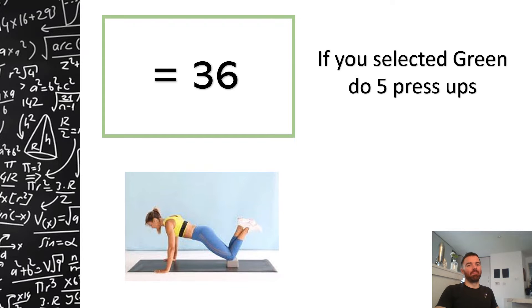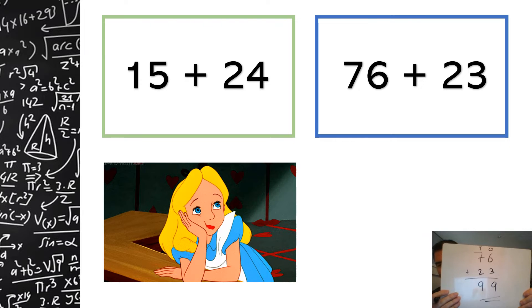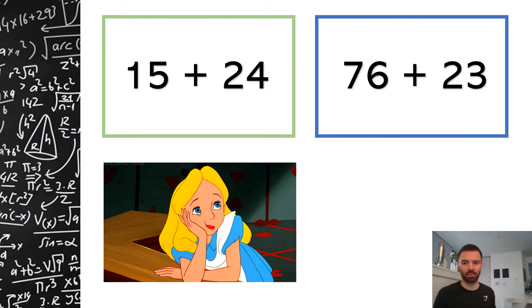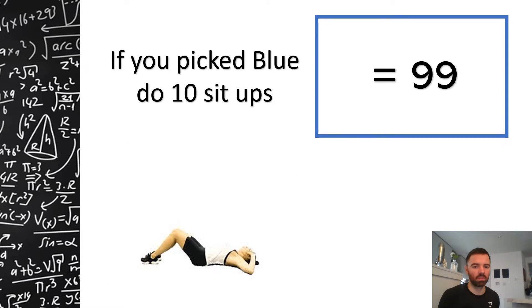Okay, okay, we're ready for the next one. Here we go: 15 add 24 or 76 add 23. Hmm, I know. I'm gonna go, I'm gonna go for, I'm gonna do blue because blue has been safe the whole time, so I think it'll be safe again. So blue, right. 76 add 23. Okay, I'm gonna do this one vertically. Six and three is nine. Right, okay.